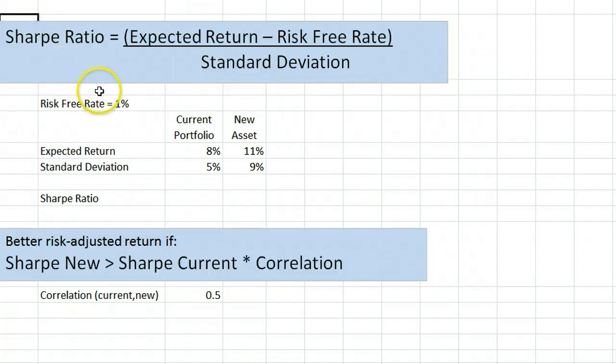The Sharpe Ratio is a measure of risk-adjusted return. To find a Sharpe Ratio for an investment, you need to find the difference between the expected return and the risk-free rate, and divide by the standard deviation.